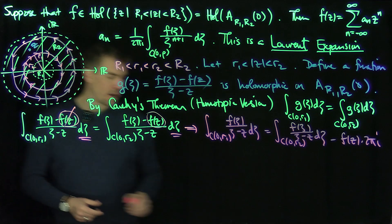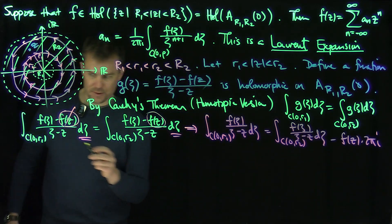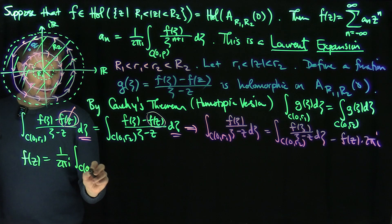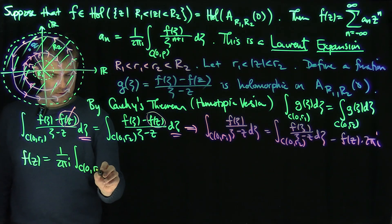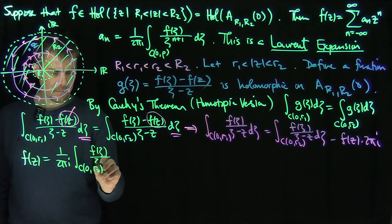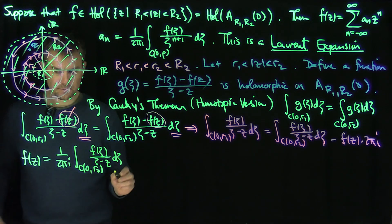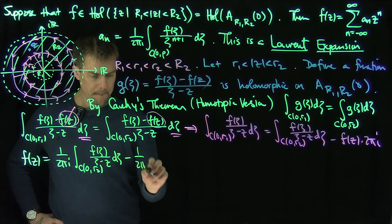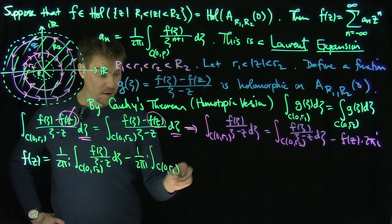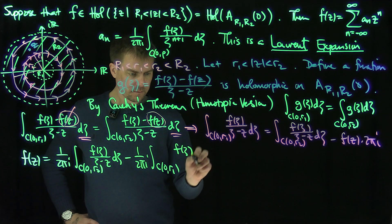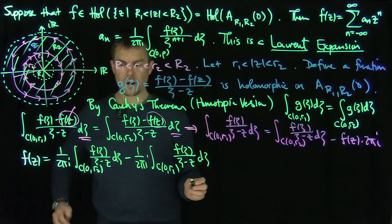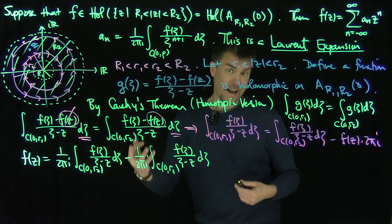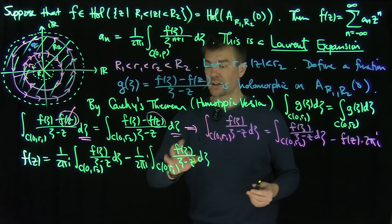This implies that the integral over C_{0,r1} of F(ζ)/(ζ−z) dζ equals the integral over C_{0,r2} of F(ζ)/(ζ−z) dζ minus F(z)·2πi. Solving for F(z): F(z) = (1/2πi) ∫_{C_{0,r2}} F(ζ)/(ζ−z) dζ  −  (1/2πi) ∫_{C_{0,r1}} F(ζ)/(ζ−z) dζ. Now we'll use the fact that the Cauchy kernel is analytic, so we can expand it in a Taylor series.